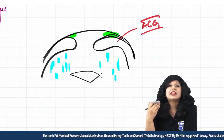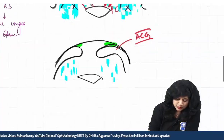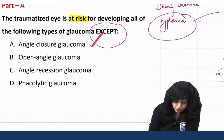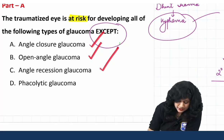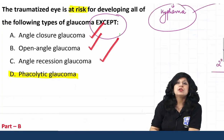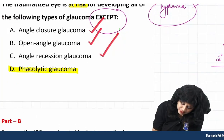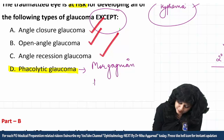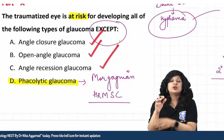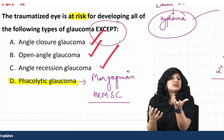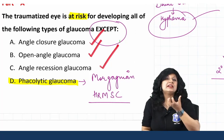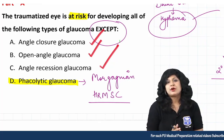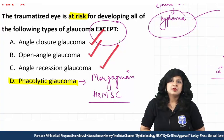So we can have angle recession glaucoma, trabecular block open angle glaucoma, acute congestive glaucoma, and chronic synechial angle closure glaucoma in this case. Looking at the options, angle closure glaucoma — yes, open angle glaucoma — yes, angle recession glaucoma — yes. The answer is phacolytic glaucoma, because phacolytic glaucoma occurs in Morgagnian-type hypermature senile cataract, where cortex disintegration causes protein leakage through the capsule that blocks the trabecular meshwork. This is not found in cases of blunt trauma. So the answer is phacolytic glaucoma.